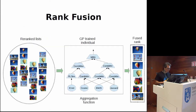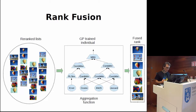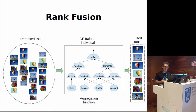For the aggregation, or fusion, of multiple rankings, a genetic programming approach was applied. This method was trained using the development data and integrated order-based and score-based rank-fusion methods.